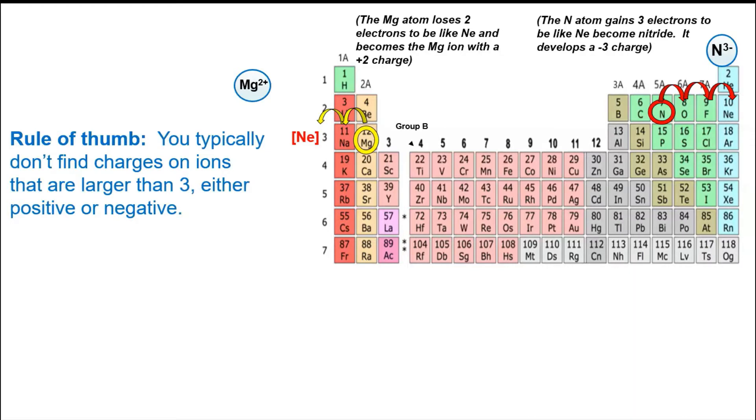The main rule of thumb to think about as we go along is that you typically don't find charges on ions that are larger than three, either positive or negative. It doesn't say that they don't exist, just that if you do a calculation and get something above three as far as the absolute value, you might want to look at it again.